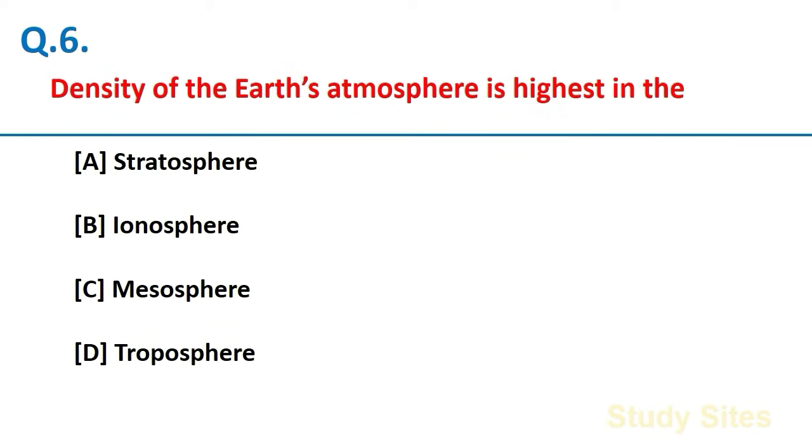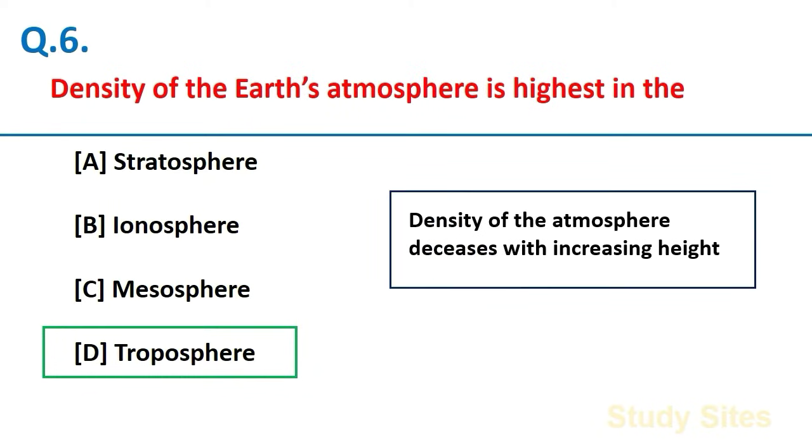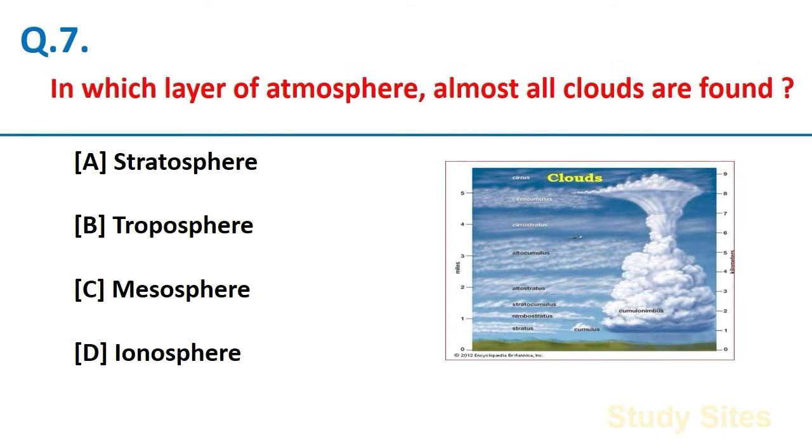Density of the Earth's atmosphere is highest in the Troposphere. And density of the atmosphere decreases with increasing height. In which layer of atmosphere almost all clouds are found? Troposphere.